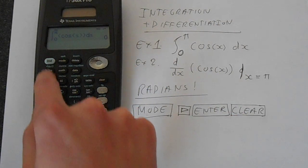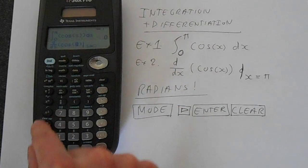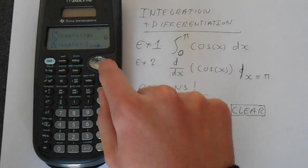For the derivative, press second function derivative. We want cos and then the variable. Close the brackets.